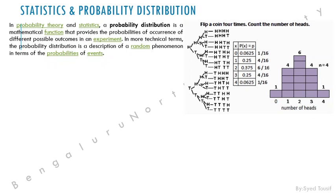In probability theory and statistics, a probability distribution is a mathematical function that provides the probabilities of occurrence of different possible outcomes in an experiment. In technical terms, a probability distribution is a description of a random phenomenon in terms of probability of events. We cannot predict the exact outcome, but we can say this much is the probability of occurrence of a given event.